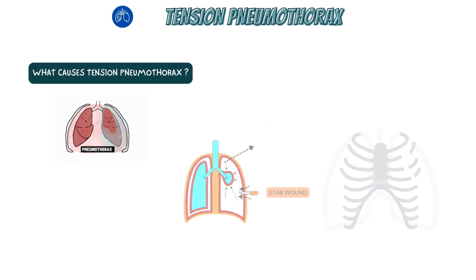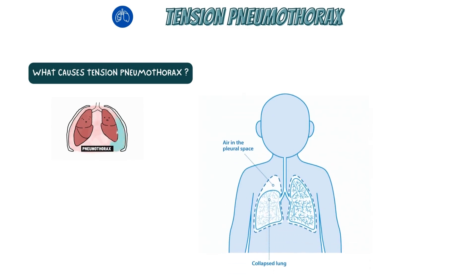A tension pneumothorax is a form of pneumothorax that happens when the pleural space has a one-way valve effect. Accordingly, the patient draws more air into the pleural space with each and every breath, leading to a significant high-pressure air collection.